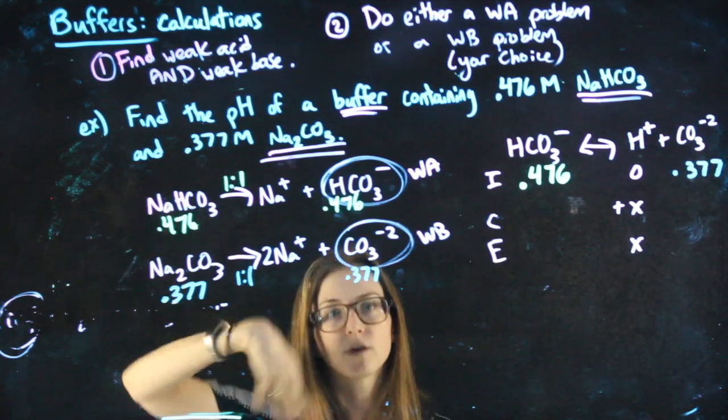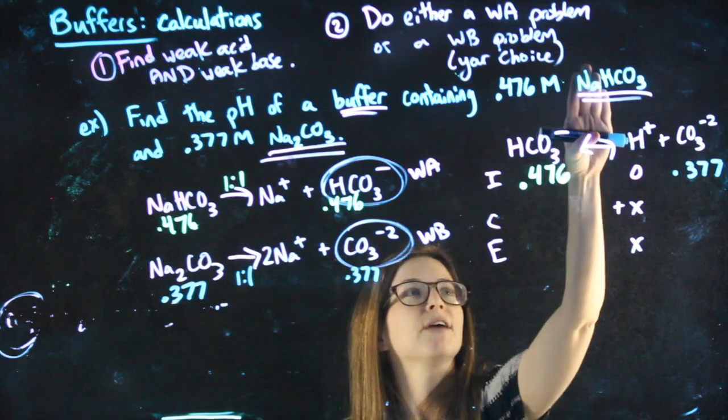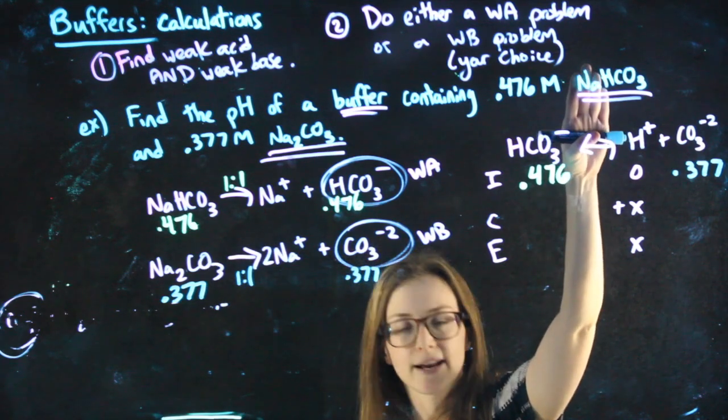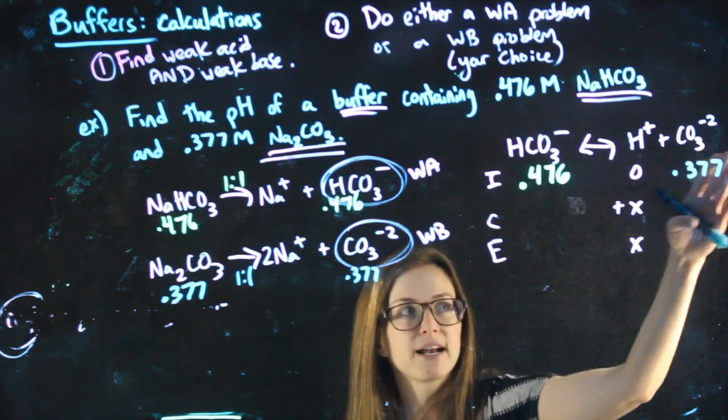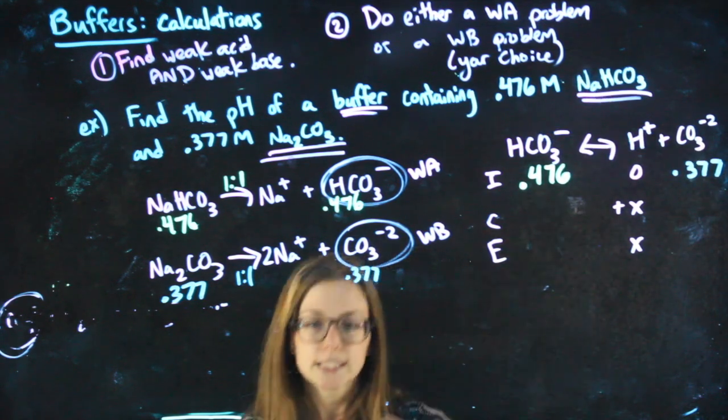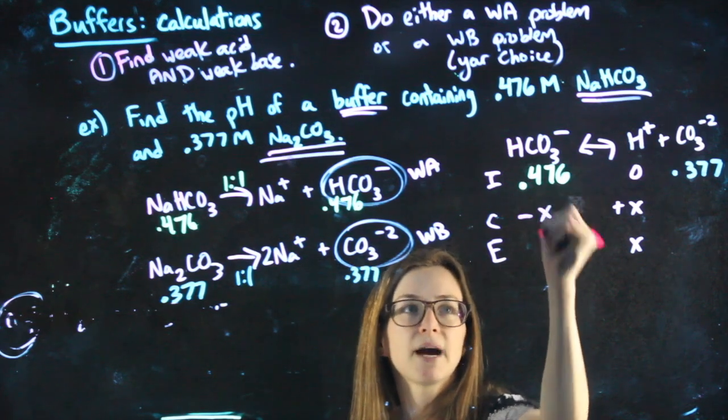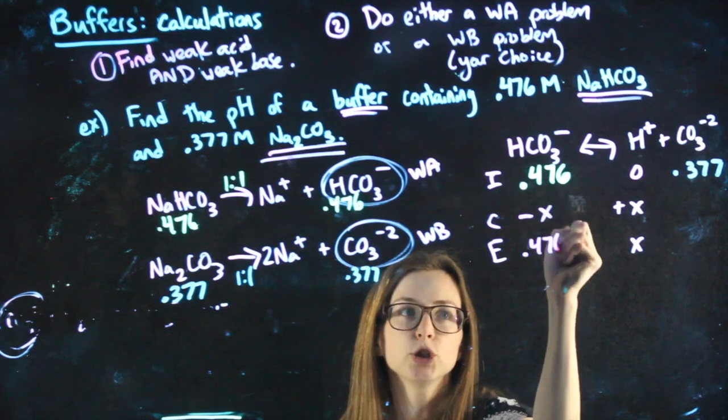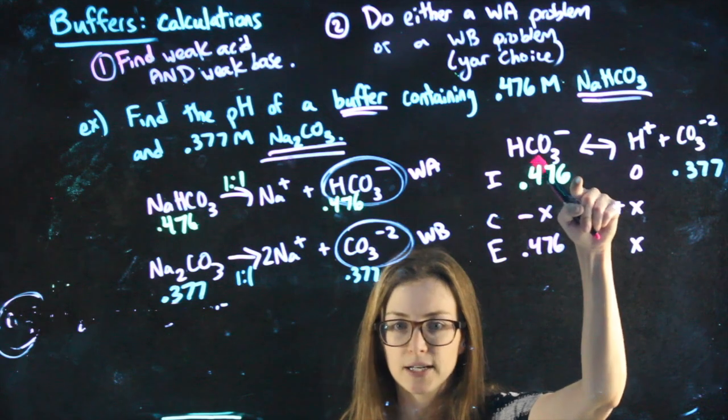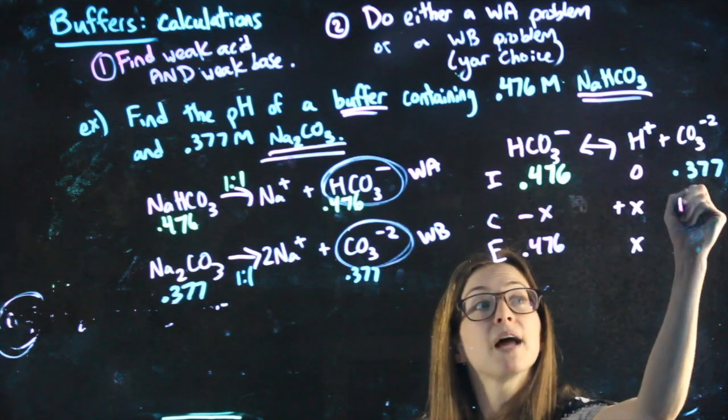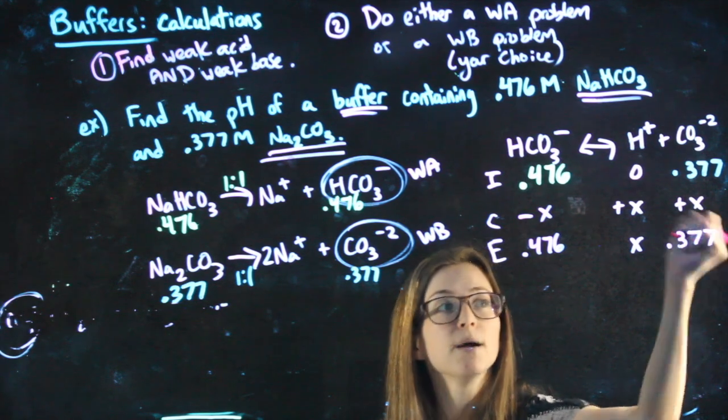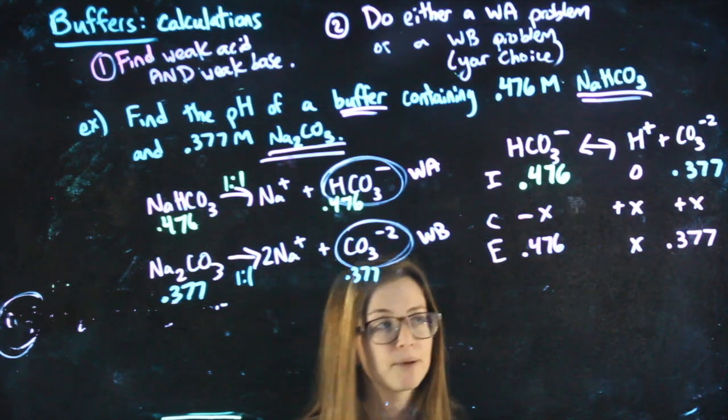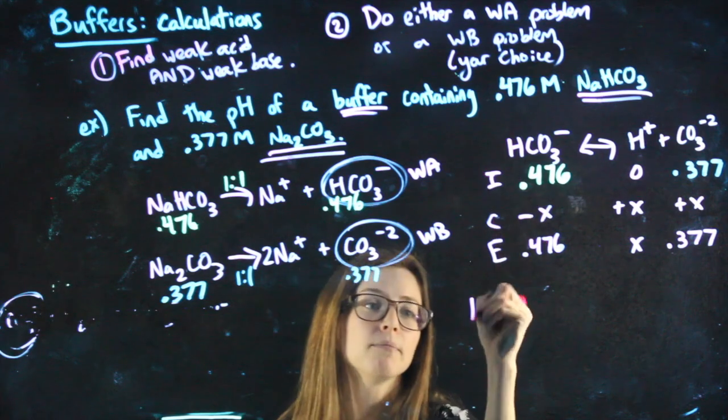If they weren't salts, you would have already, like if I just gave you 0.476 molar HCO3, then you'd have the molarity of the HCO3. Mathematically, it wouldn't be any different over here. Continuing on with my ice chart, you're used to saying minus X and then it doesn't change because X is so small comparatively. On this side, we apply that same logic, plus X, and then it doesn't change because X is so small comparatively.